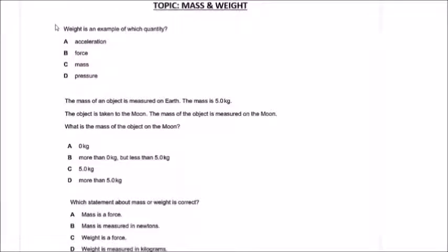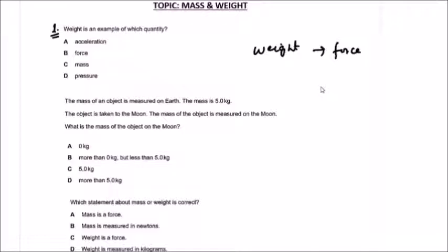Question number one: Weight is an example of which quantity? We have four options: acceleration, force, mass, and pressure. To solve this type of question, recall the definition — weight is the gravitational force that acts on an object. So weight is a type of force. Acceleration — no. Force — yes. Mass — no. Pressure — no.